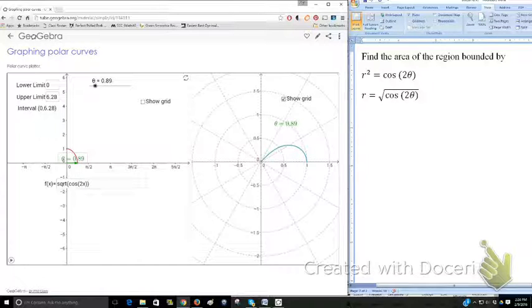So let's go ahead and now calculate our integral. We're going to look at the integral from 0 to pi over 4. And remember, as a reminder, to get the area of a polar curve, we're looking at the integral from alpha to beta of 1 half r squared d theta.